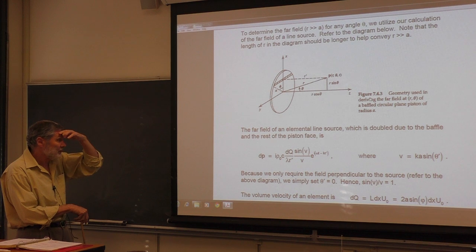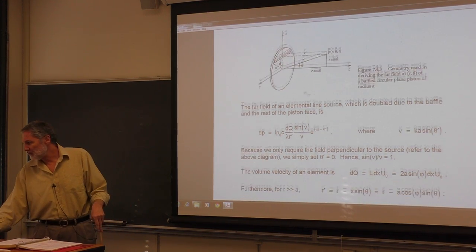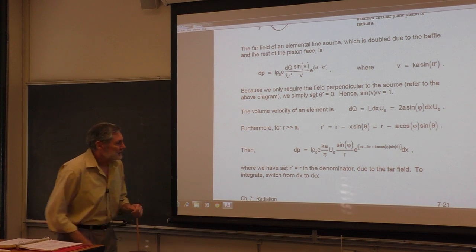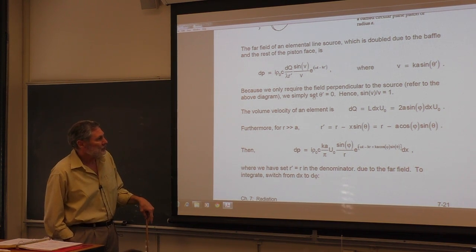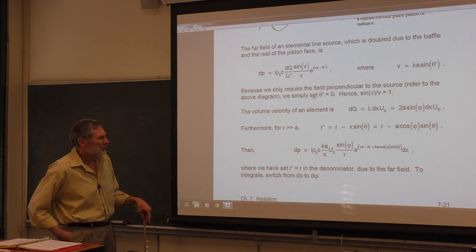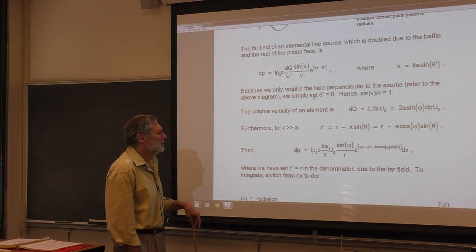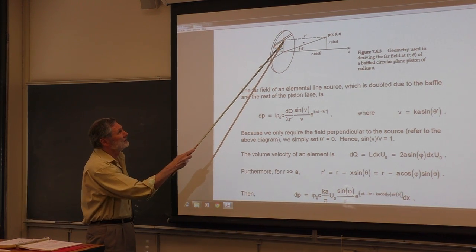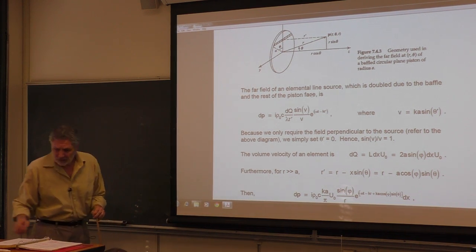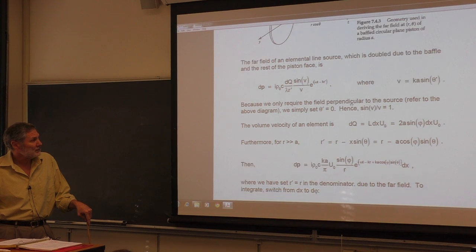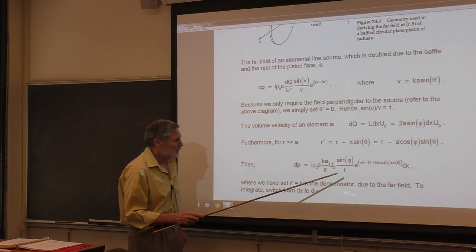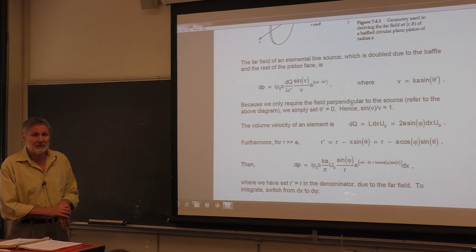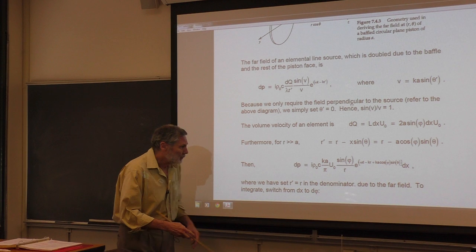We ended up with this expression for the pressure due to one of the line source elements. This distance here is x (the x-axis), and our expression for the far-field pressure due to that line element is in mixed variables — x and phi. We need to put everything in one variable to integrate, so we have to pick one of them.